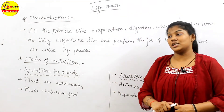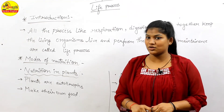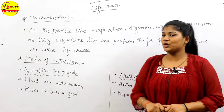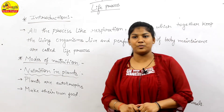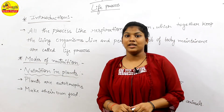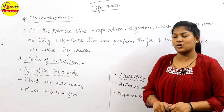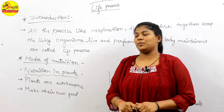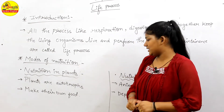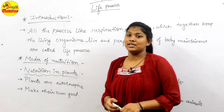Nutrition in plants is autotrophic in nature. Autotrophic means that they make food on their own. They don't depend on other animals or plants for their food — they make their food using sunlight and other things.